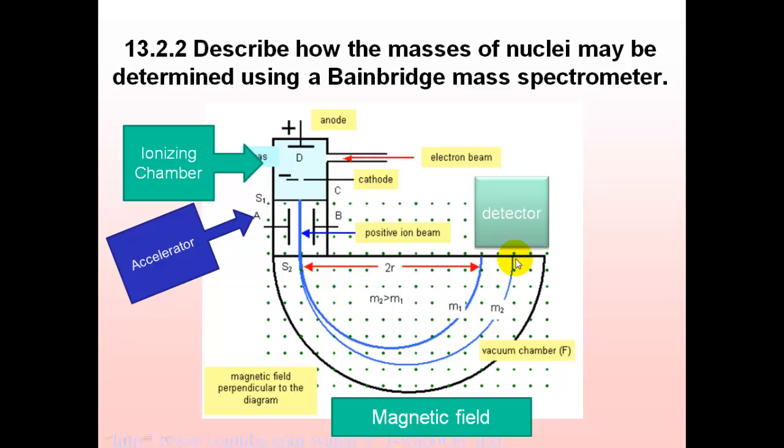If it detects that it goes in here, it knows it's got a large mass. Here it knows it's got a smaller mass. This is with the same acceleration voltage and this is basically what it is.